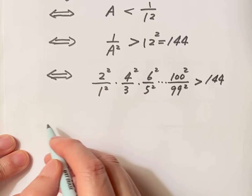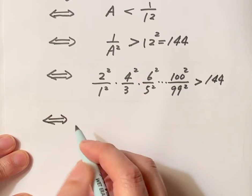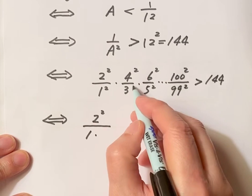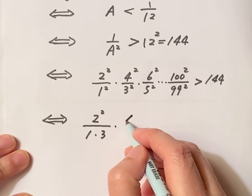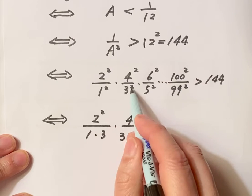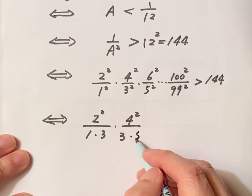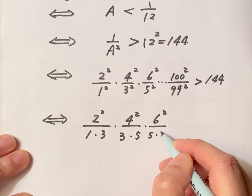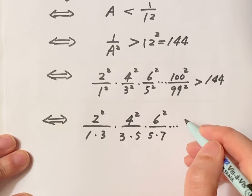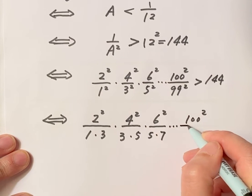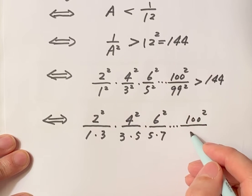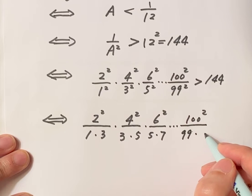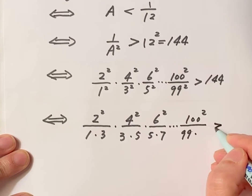Rewrite the left-hand side: 2 squared, the numerator. The denominator we write down this way: 1 times 3 times 4 squared over 3 times 5, times 6 squared over 5 times 7, until 100 squared. 99 here, 99 here, so 99 here. We don't have the next number after 100, 101. So here, this is bigger than 144.